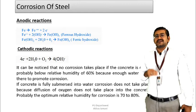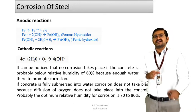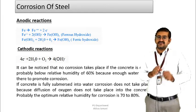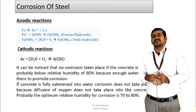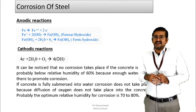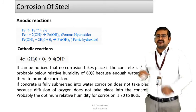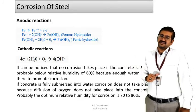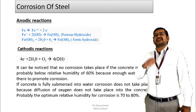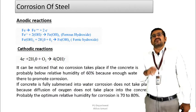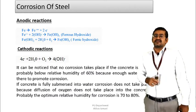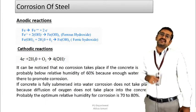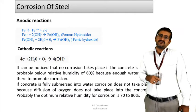There is a specific range: if the relative humidity is between 70 to 80%, then the corrosion process is likely to be initiated. That is, if the relative humidity of the concrete is between 70 to 80%, it is best suited to start the process of corrosion of reinforcement.